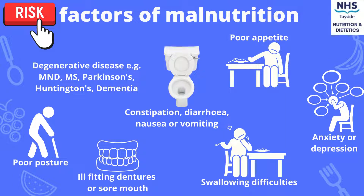There are many risk factors which can lead to malnutrition. This includes progressive illnesses such as motor neuron disease, Parkinson's, or dementia. Acute illnesses resulting in constipation, diarrhea, nausea, or vomiting. If someone has a poor appetite or a small dietary intake. Poor mental health problems such as anxiety or depression. Problems with swallowing which may require texture modification. Poor oral health such as ill-fitting dentures or a sore mouth, and also postural problems or dexterity issues.